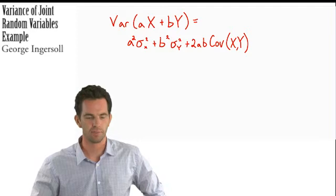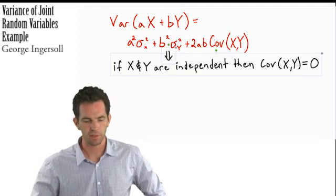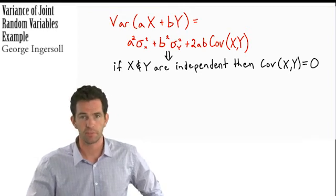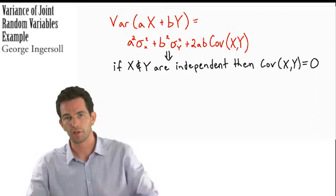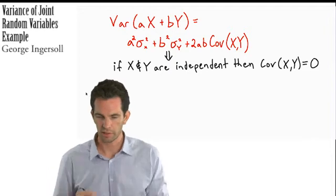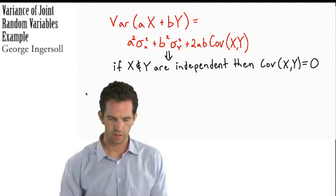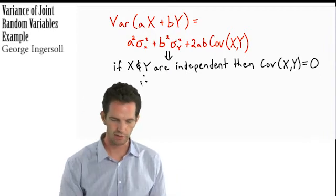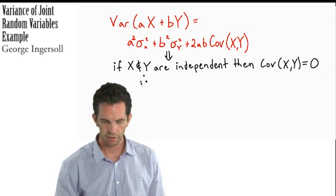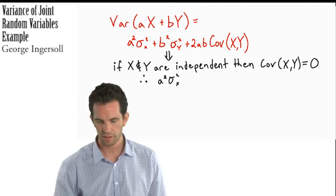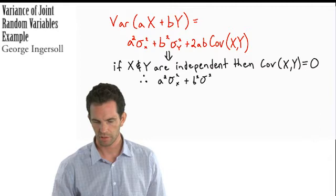I want to simplify this equation a little bit for specific circumstances. If x and y are independent — these two random variables are independent of each other — then the covariance is equal to zero. That helps simplify this equation quite a bit.